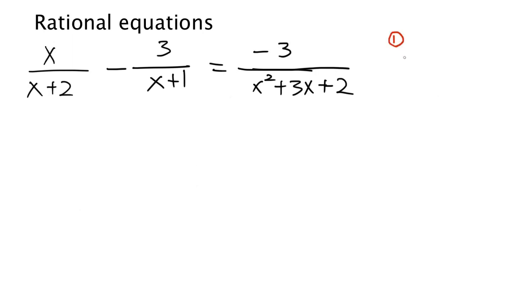The first thing you have to do is to get rid of the denominator. To do that we're going to find the least common denominator and multiply every term by this least common denominator.